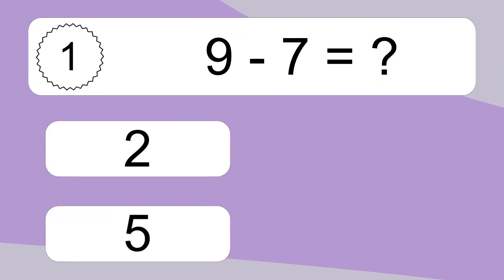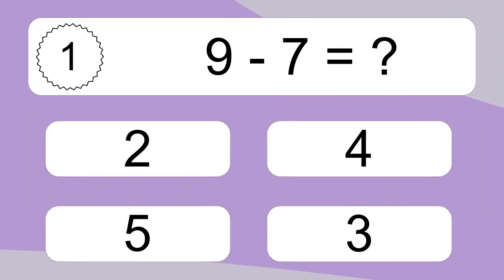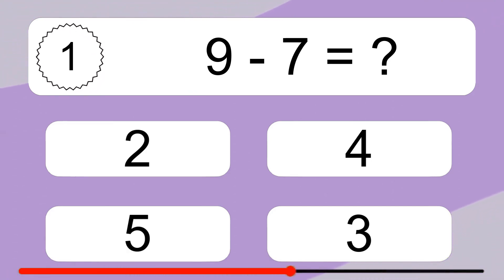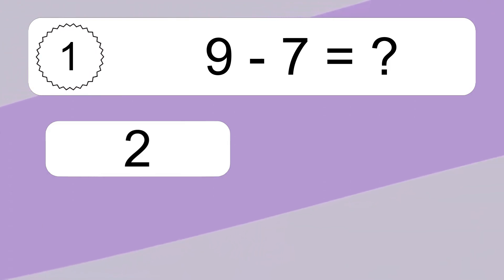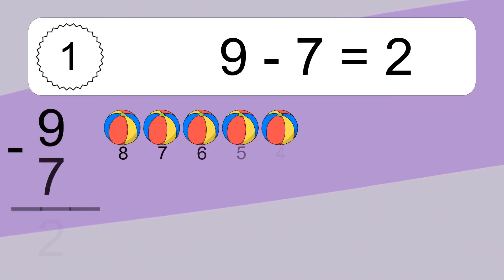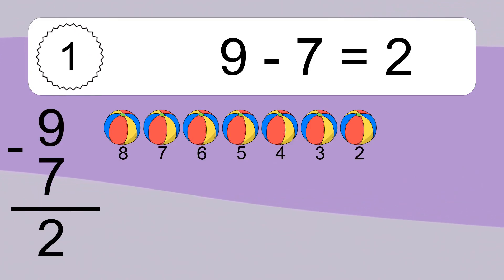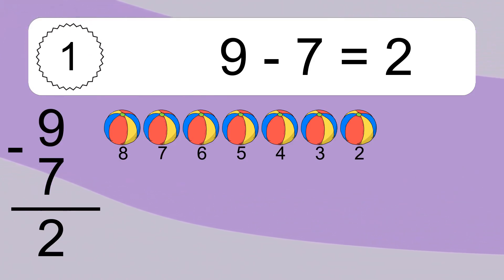9 minus 7 equals what? 9 minus 7 equals 2. Let's count it: 8, 7, 6, 5, 4, 3, 2.